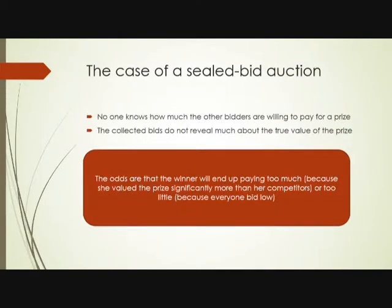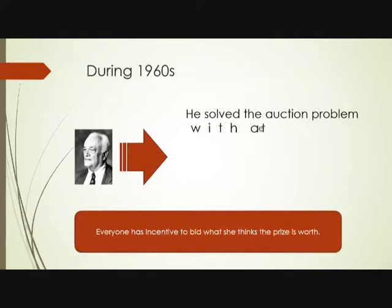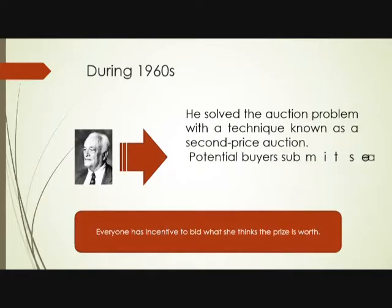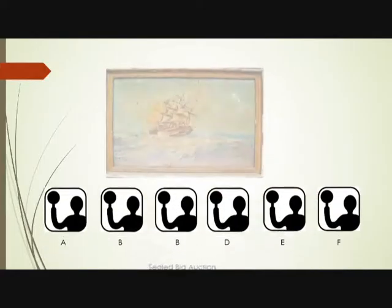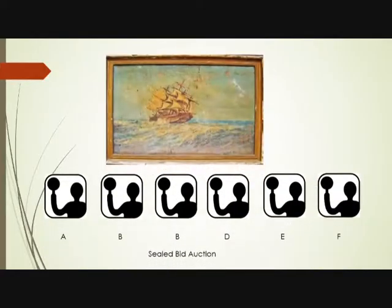In the case of a sealed bid auction, no one knows how much other bidders are willing to pay for an item. The collected bids do not reveal much about the true value of the item. During the 1960s, William Vickrey solved the auction problem with a technique known as a second price auction.